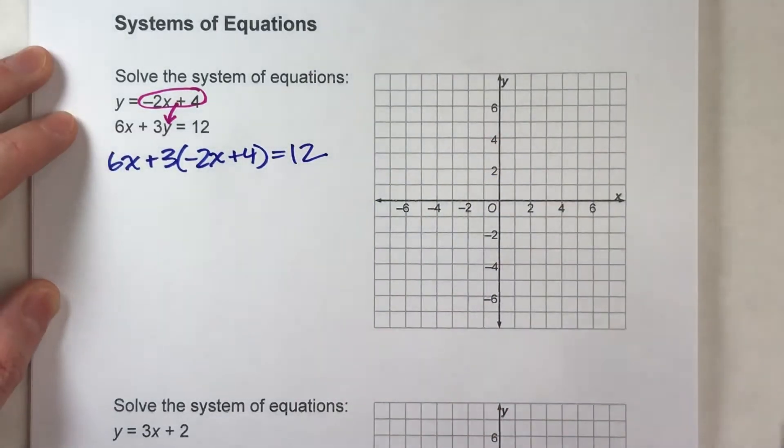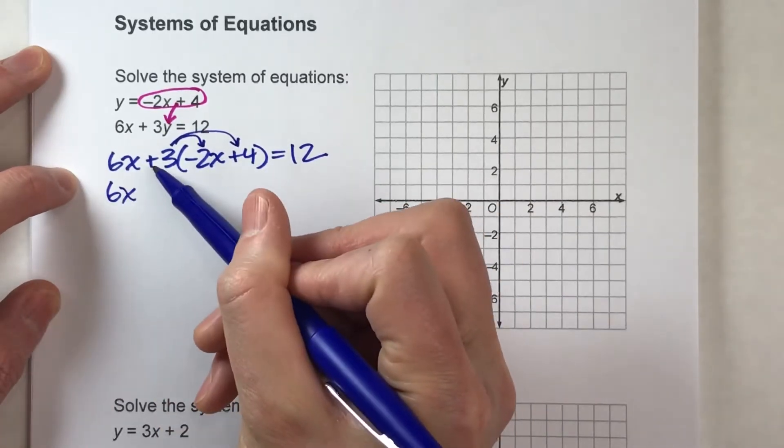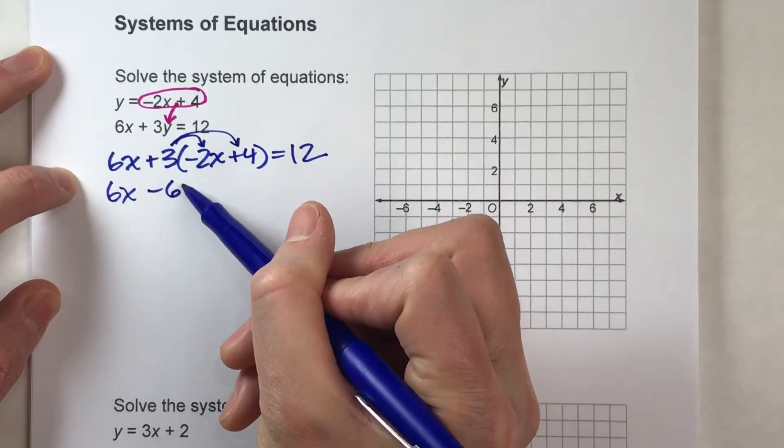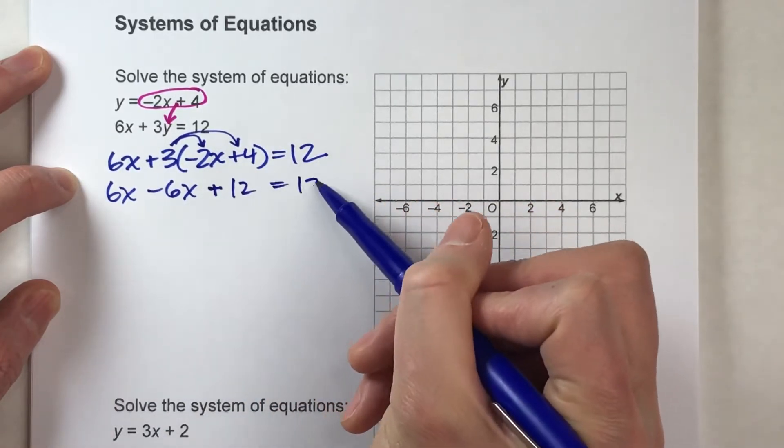Now do my distributive property next. So I get 3 times -2x is -6x and 3 times 4 is 12 equals 12.